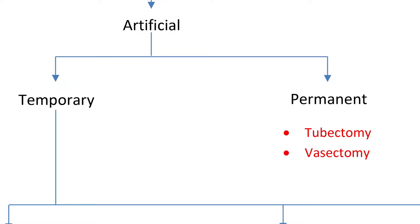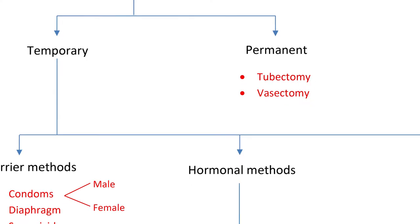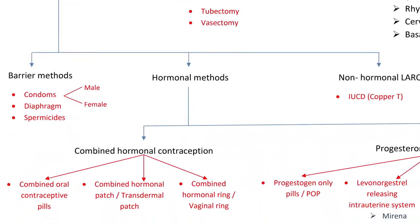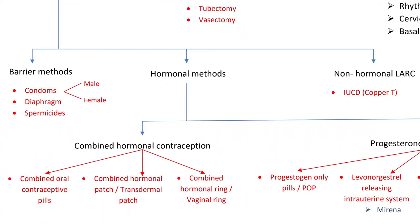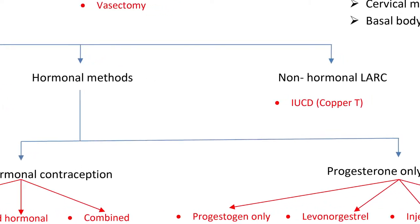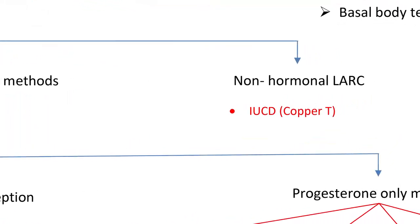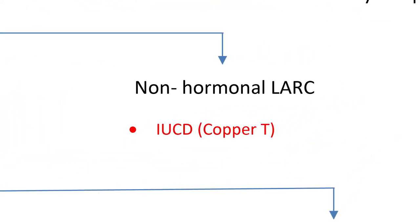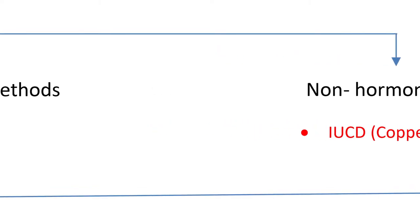Temporary methods can be categorized mainly into barrier methods, hormonal methods, and non-hormonal long-acting reversible contraception. Copper IUCD comes under non-hormonal long-acting reversible contraception.